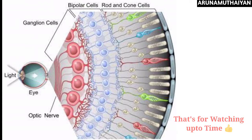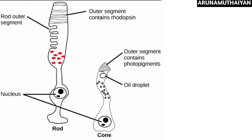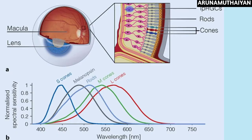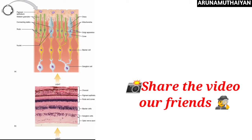Both rhodopsin and iodopsin contain retinal. Retinal is a substance that is a derivative of vitamin A. Photoreceptor pigments like rhodopsin and iodopsin are associated with vision and have two parts: one is a glycoprotein known as opsin, and the other is the derivative of vitamin A known as retinal.